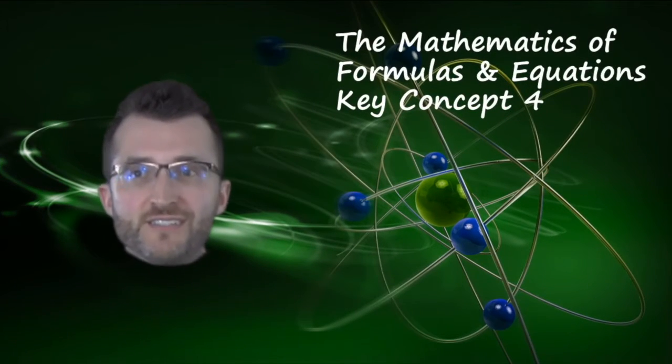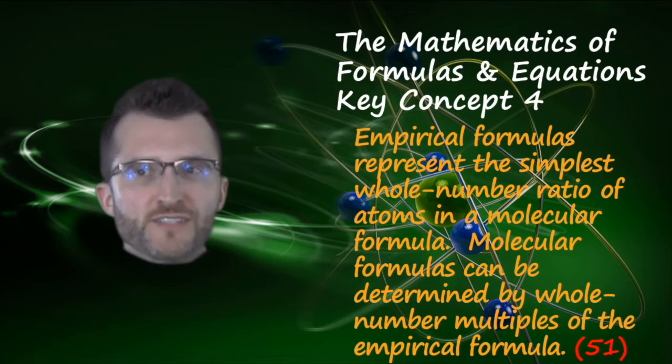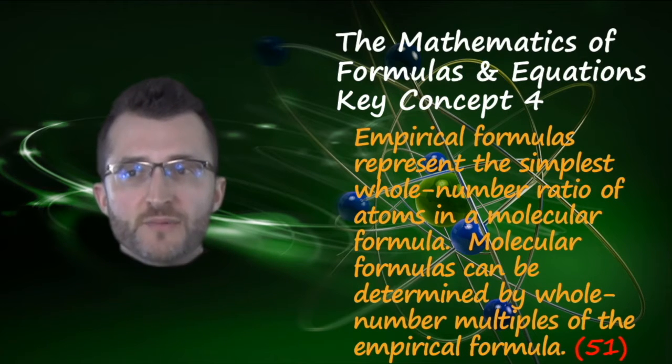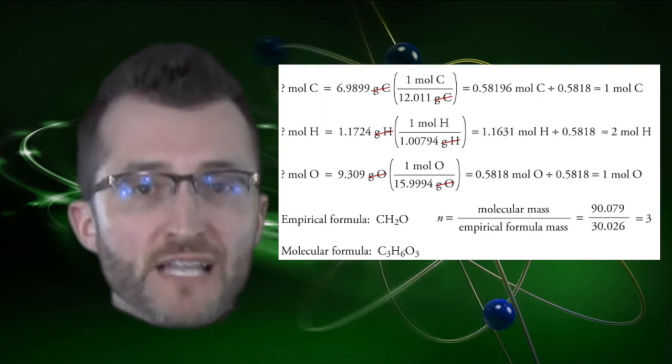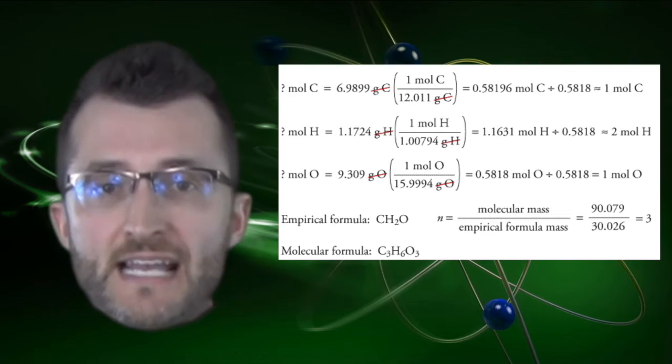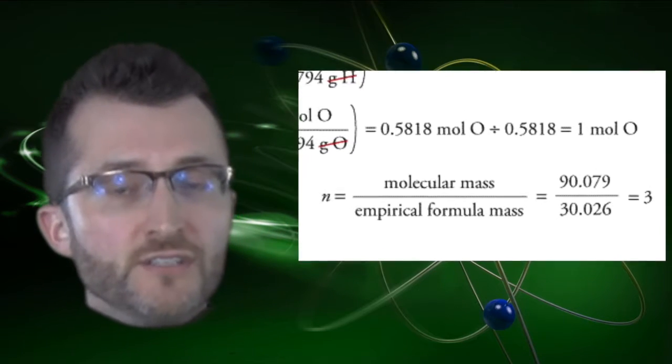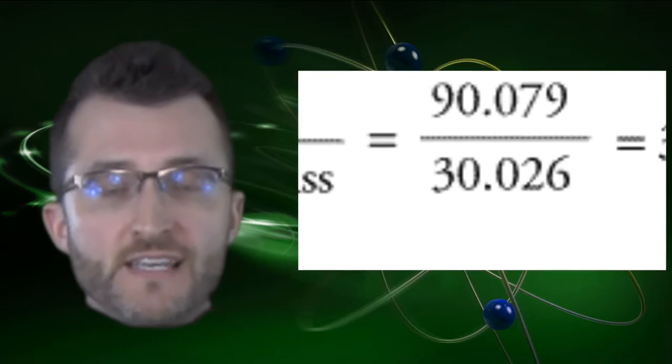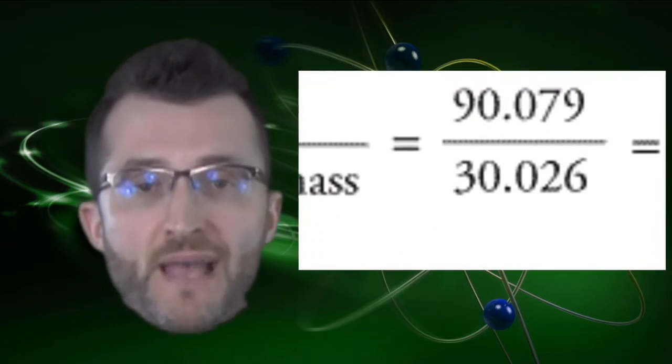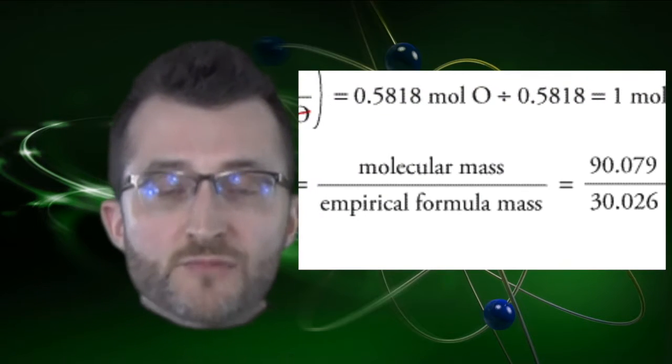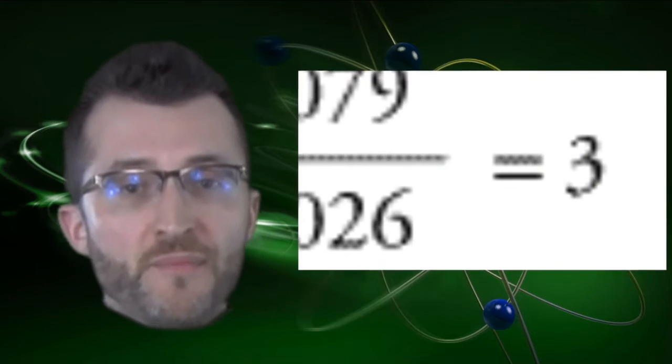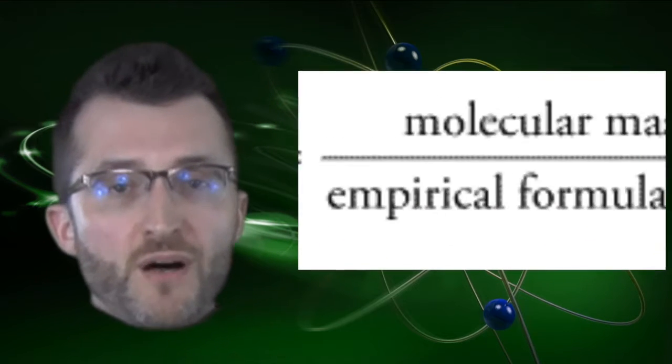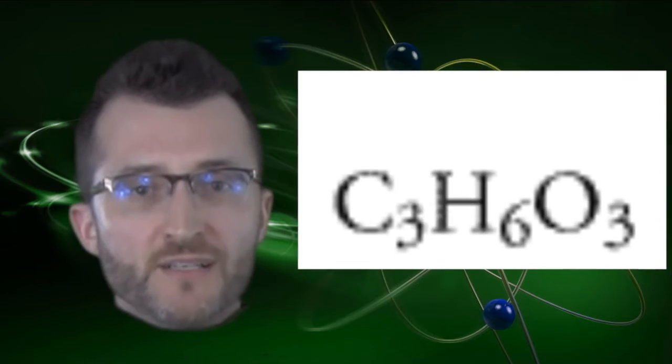The mathematics of formulas and equations key concept four: Empirical formulas represent the simplest whole number ratio of atoms in a molecular formula. Molecular formulas can be determined by whole number multiples of the empirical formula. Let's say you are asked to find a molecular formula. You will be given the empirical formula and the molecular mass. First thing you want to do is find the mass of that empirical formula that's given. Then, you're going to divide the mass of the empirical formula into the given molecular mass, which is the mass of the molecular formula you're trying to find. You will get a whole number from the division. You will finally multiply the subscripts of the empirical formula by that whole number and voila, you've got your molecular formula.